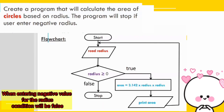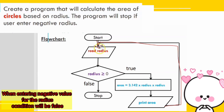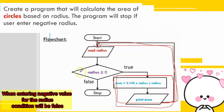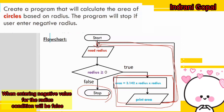For the flowchart: start uses a capsule shape. Read radius uses a parallelogram shape. The decision diamond checks if radius is greater than or equal to zero. If true, the process box computes area = 3.142 × radius × radius, then prints area, then reads radius again and checks the condition again. When the condition is false, stop. This is the flowchart example for sentinel control.